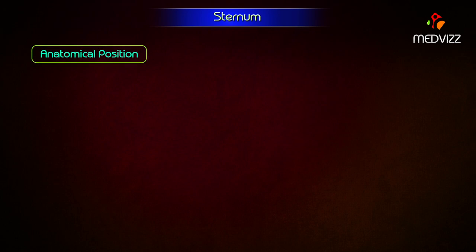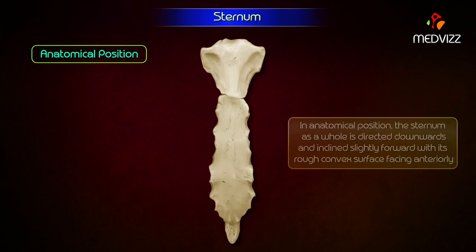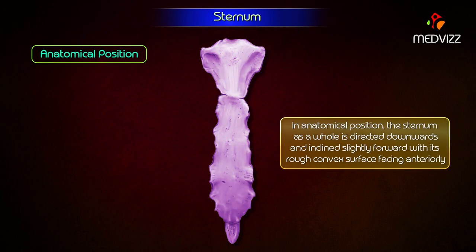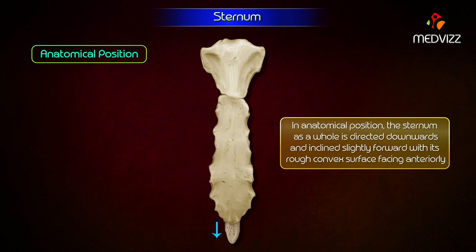Anatomical position. In anatomical position, the sternum as a whole is directed downwards and is inclined slightly forward, with its rough convex surface facing anteriorly. Its broad end is directed upwards and the lower pointed end is directed downwards.